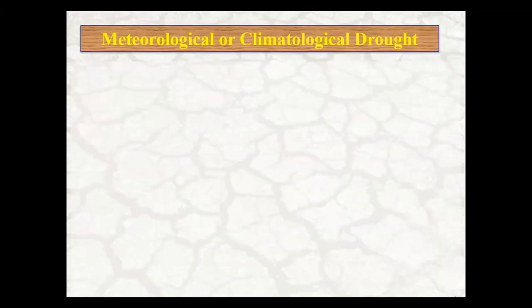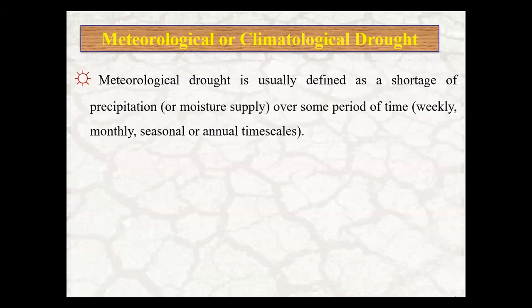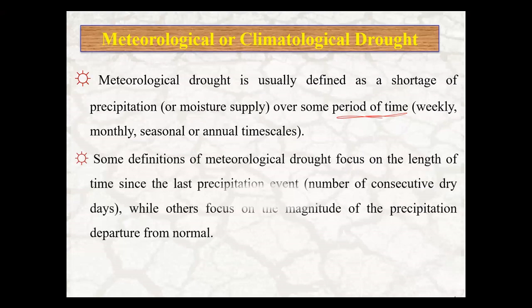Meteorological drought is usually defined as a shortage of precipitation or moisture supply over some period of time. When we say 'some period of time,' it means a weekly, monthly, seasonal, or annual time scale. Some definitions of meteorological drought focus on the length of time since the last precipitation event.